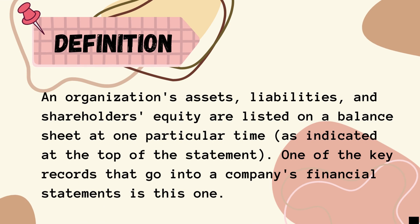What is a balance sheet? A balance sheet is an organization's assets, liabilities, and shareholders' equity listed at one particular time, as indicated at the top of the statement. It is one of the key records that goes into a company's financial statement. The balance sheet shows a company's total income, including money coming in and going out. Another name for the balance sheet is SFP, or Statement of Financial Position.